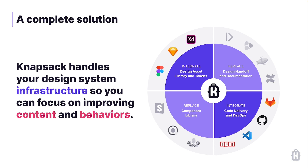We see teams that are successful in building sustainable design system practices have three core areas of that practice. The content — meaning the design, the code, the design tokens, their documentation. The behaviors — meaning the processes, workflows, and culture they've built to use the system. And the infrastructure — the tools and services layer that enables this operation. And that infrastructure is what Knapsack aims to provide.